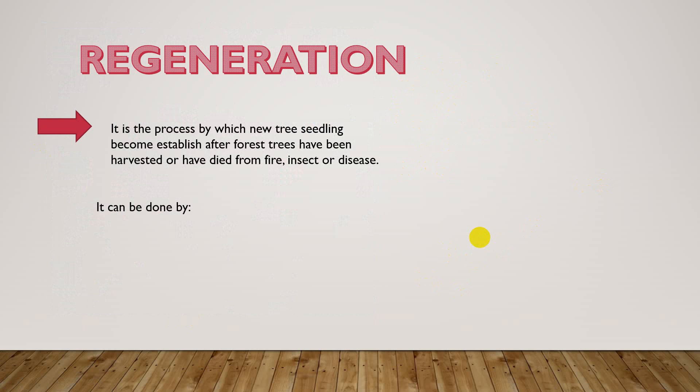Regeneration is the process by which new trees become established after forests have been harvested or have died from fire, insects, or disease. After a tree is cut, new plants can become established by natural means or by artificial methods.